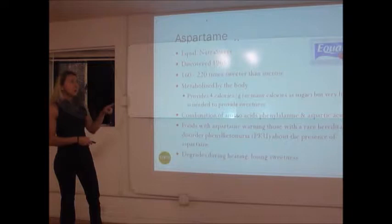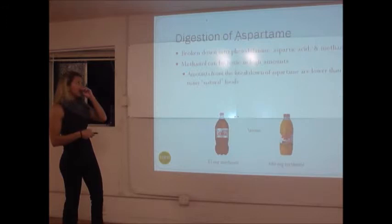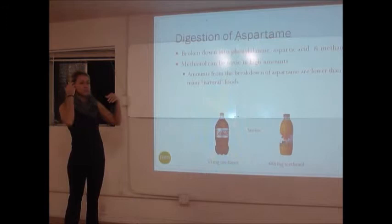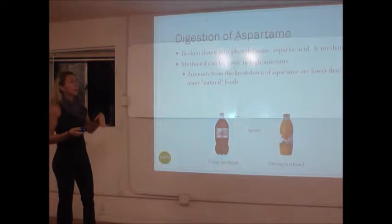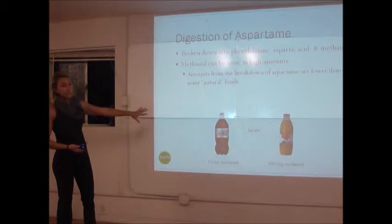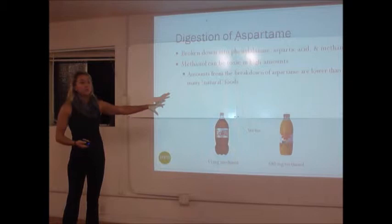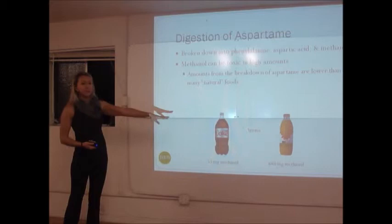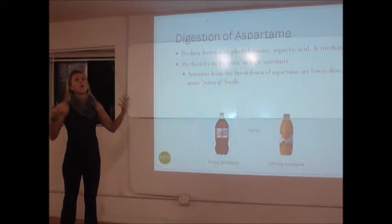One thing to note is you can't use Equal in baking — it breaks down when cooked because it's not heat stable. Another concern people raise is the methanol produced when aspartame breaks down into phenylalanine, aspartic acid, and methanol. But the methanol from drinking a liter of diet soda — about 55 milligrams — is significantly less than what's naturally found in juice, which would give you 680 milligrams. It's a naturally occurring level our bodies can metabolize.